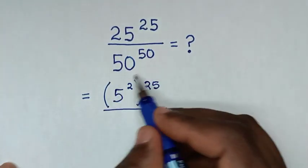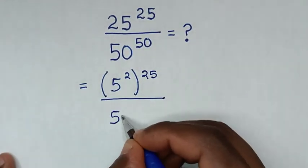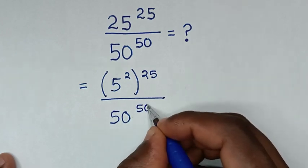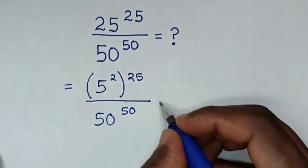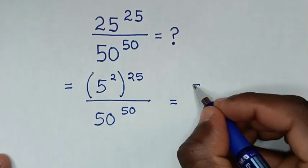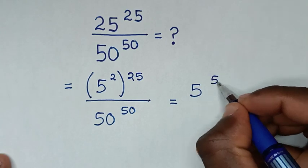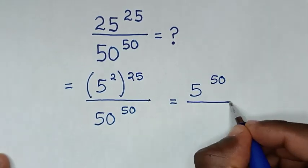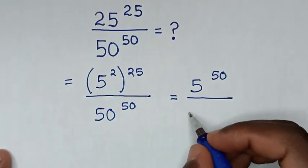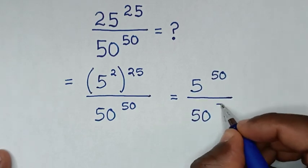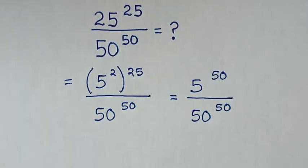Over this same exponent 50 to the power of 50. Then in the next step it will be equal to 5 to the power of 2 times 25 is power of 50, then over this exponent 50 to the power of 50.